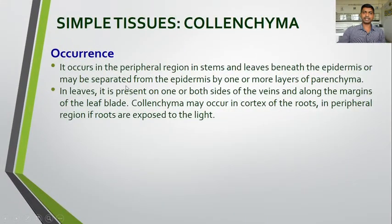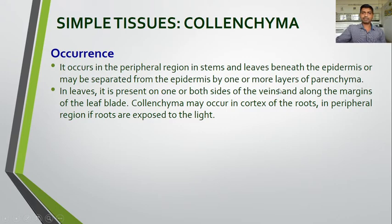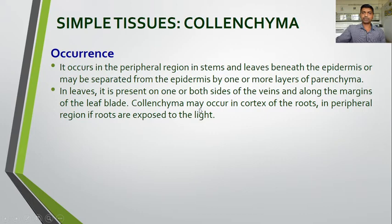Regarding the occurrence of collenchyma: it occurs in the peripheral region in stems and leaves beneath the epidermis, in the hypodermal region. This collenchyma is seen in the peripheral regions of stems and leaves, or may be separated from the epidermis by one or more layers of parenchyma. In leaves, it is present on one or both sides of the veins and along the margins of the leaf blade. Collenchyma may also occur in the cortex of roots in peripheral regions if roots are exposed to light.